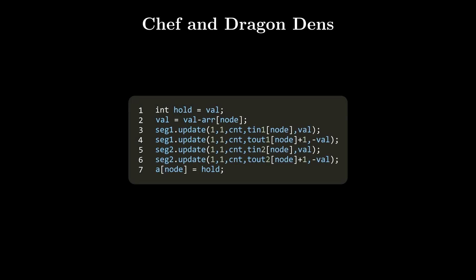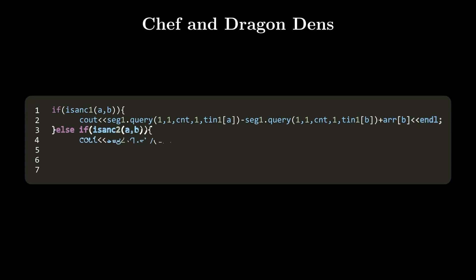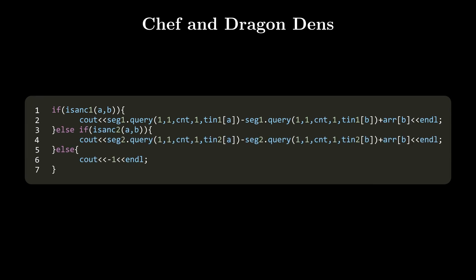Type-1 queries are implemented exactly as described: to update node to val, we compute the difference between the current and updated value and pass it to both segment trees at the appropriate positions. For type-2 queries, we check both trees to see if one node is an ancestor of the other — order matters, as B must be an ancestor of A to travel from B to A. If an answer exists, we query the appropriate segment tree, querying the path from root to B and subtracting the value then adding back B.